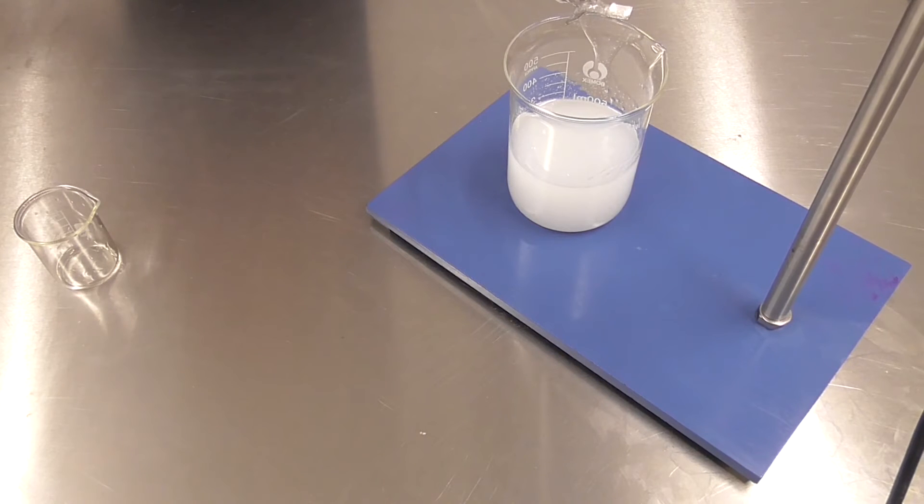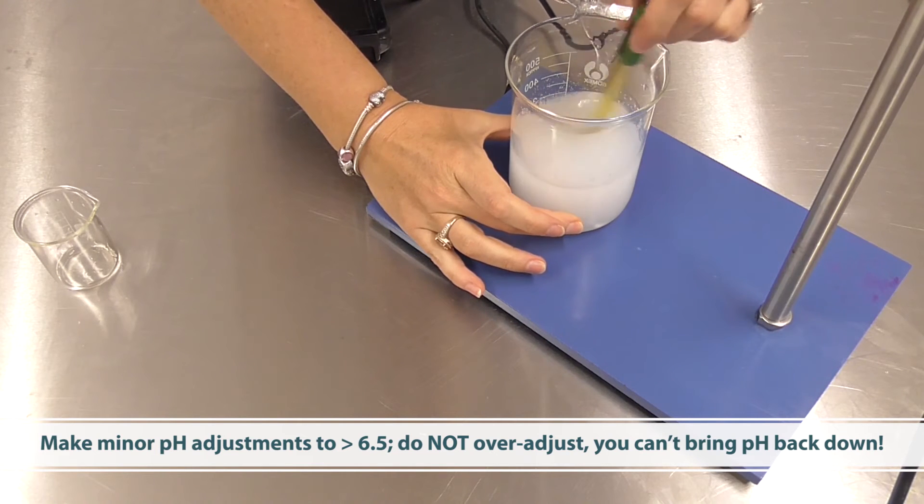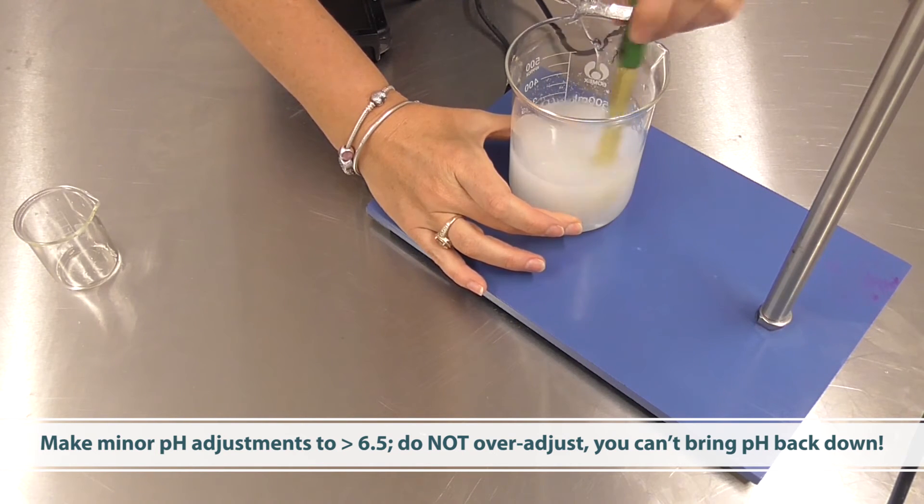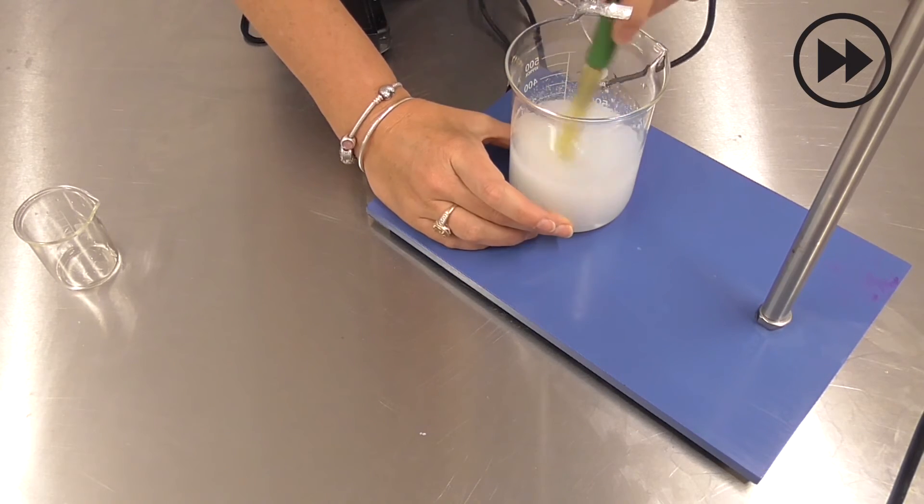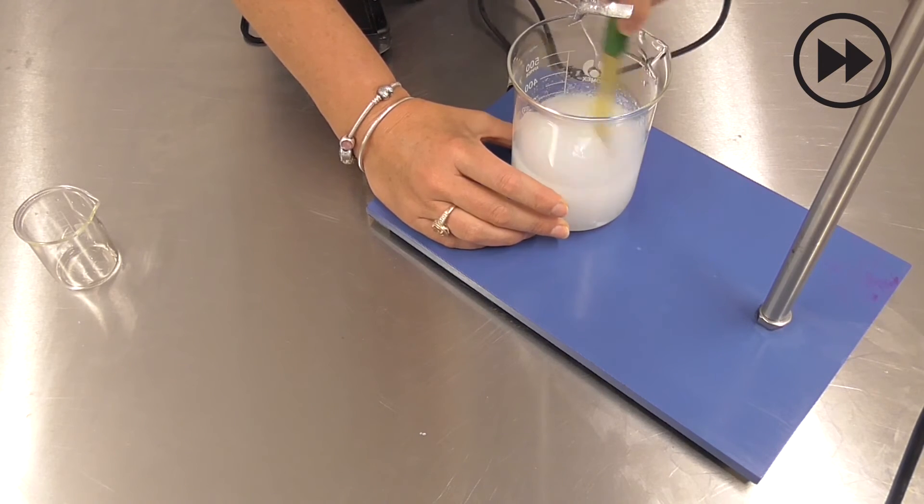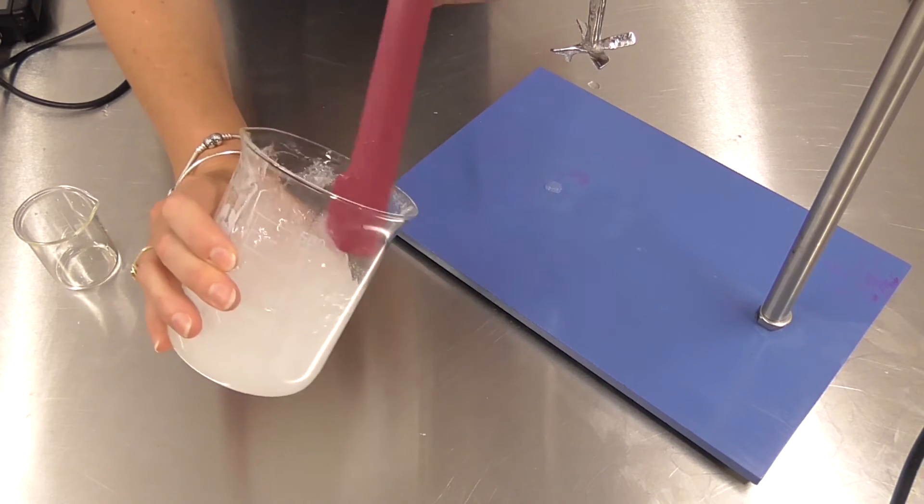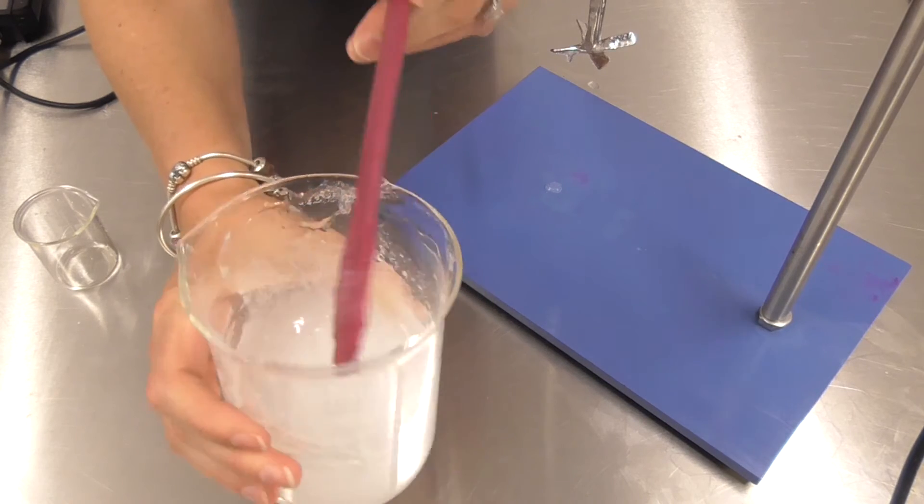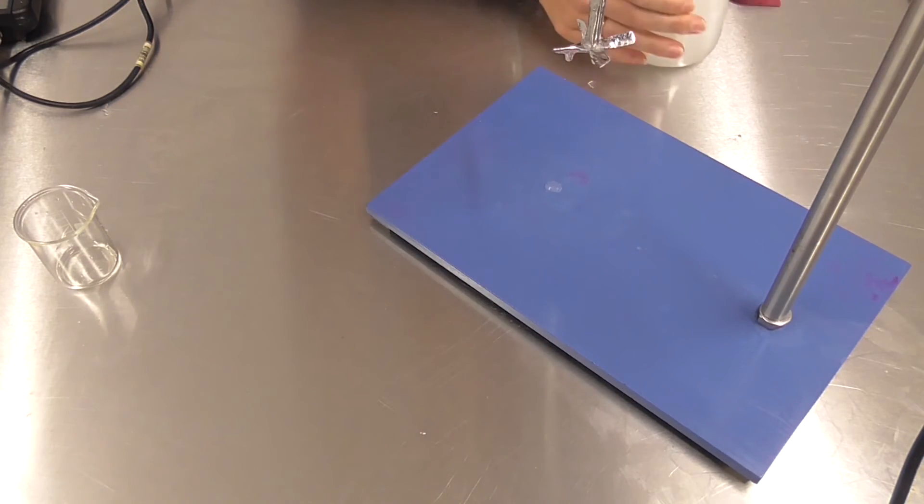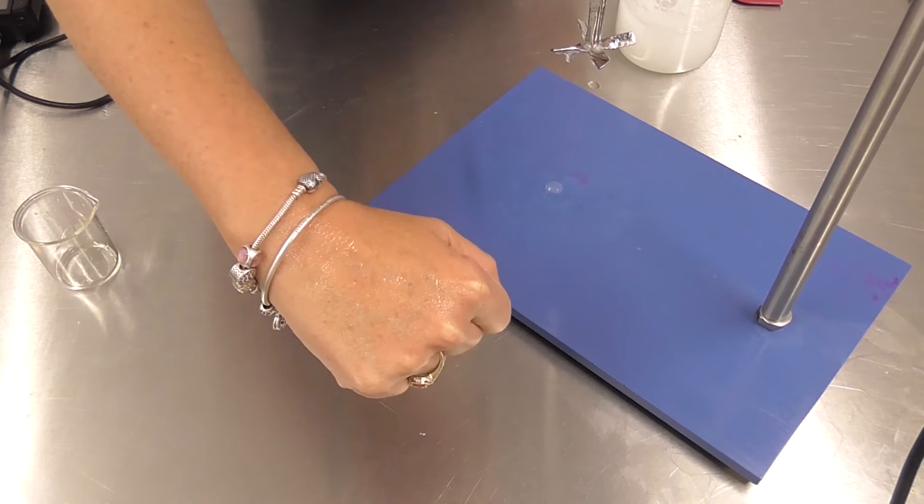We can then check the final pH and make any fine adjustments if we need to. These particular polymers work best when the pH is above 6.5 and you can now see how thick that has become. It of course will be a beautiful clear gel when those bubbles settle out and very easily sprayed as well.